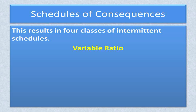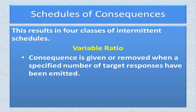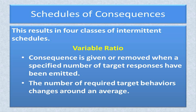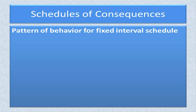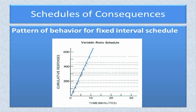The fourth and last schedule is a variable ratio schedule. In this schedule, a consequence is given or removed when a specific number of target responses are emitted, and then a different number of required target responses is set — that number of target behaviors must be emitted before reinforcement is provided. The required number of target behaviors will average to a specific number. An example is when a student raises her hand to be called upon. The student may know she will not be called on every time, but if she raises her hand often enough, she will be called upon by the teacher at some point. The pattern of behavior for a variable ratio schedule shows a high rate of responding with no rest period, as occurs in the fixed ratio schedule.